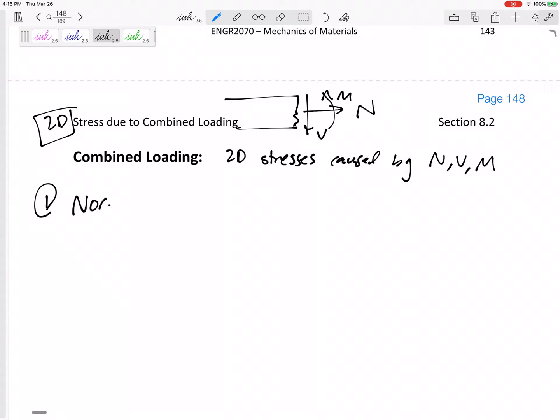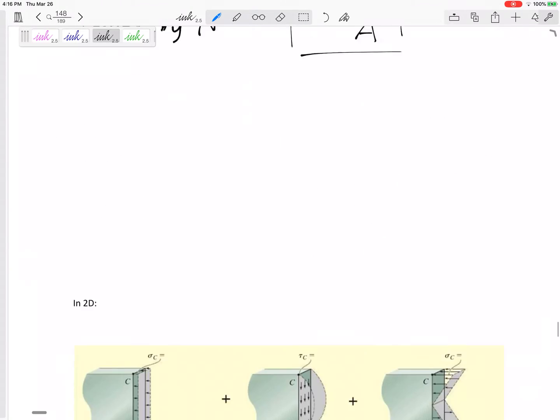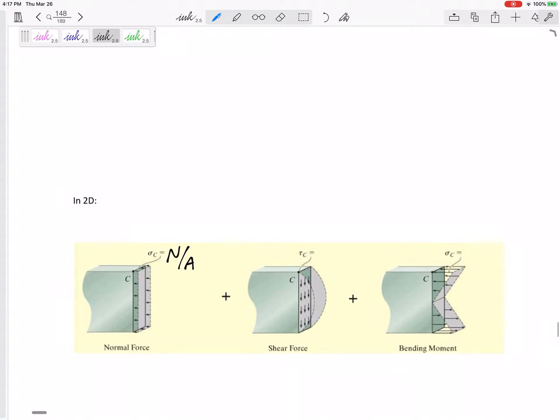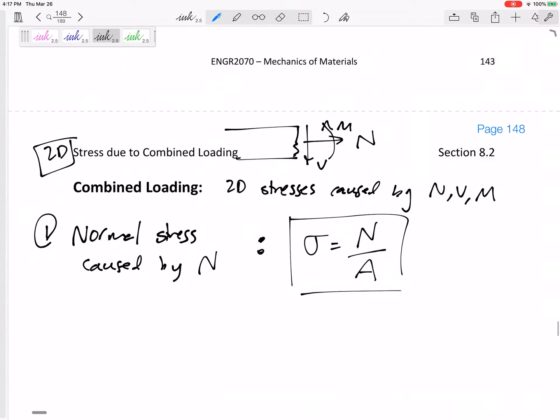So first let's start with the normal stress caused by that normal force N. Normal stress caused by that normal force N, it is a sigma and it is a uniform N over A. It's a normal stress, it's uniform N over A right here. Uniformly it's a normal stress so it is perpendicular to the cut and that would be compression right here of N over A, just the force divided by the cross-sectional area.